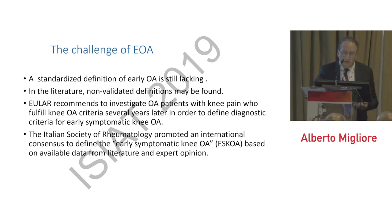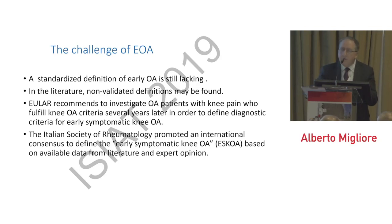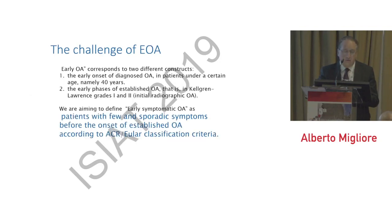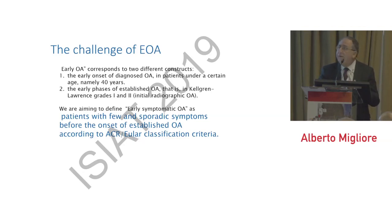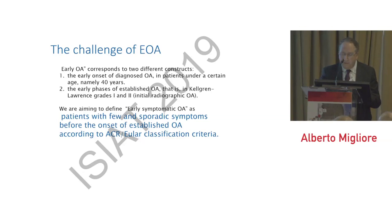Various recommendations advise investigating osteoarthritis several years before the onset of disease. With the Italian Society of Rheumatology, we promoted an international consensus to define early symptomatic knee osteoarthritis. In the literature, the definition is controversial — some speak of early onset or diagnosis in patients under a certain age, namely 40 years, or early phases of established OA at Kellgren-Lawrence grade 0-1 or 2. We are aiming to define early symptomatic osteoarthritis as patients with few and sporadic symptoms before established OA according to ACR and EULAR classification criteria.